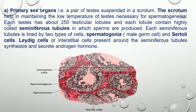The primary sex organs are a pair of testes suspended in a scrotum. The scrotum helps in maintaining the low temperature of the testes, which is necessary for spermatogenesis. Each testis has about 250 testicular lobules, and each lobule contains highly coiled seminiferous tubules in which sperms are produced.